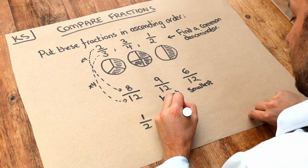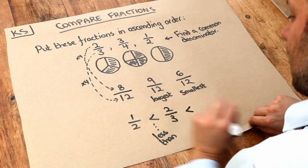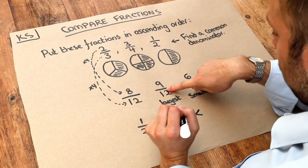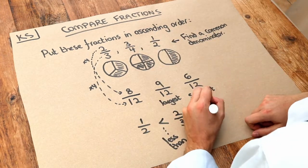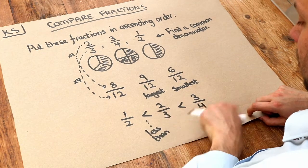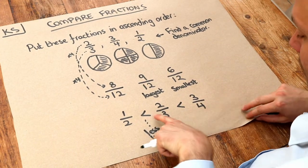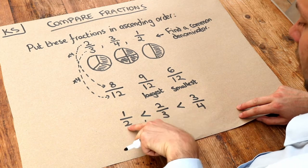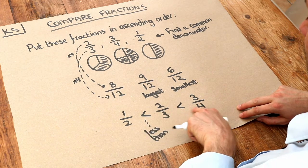So one-half is less than two-thirds, and then that's less than this middle one which was the biggest, three-quarters. So that's the order of those three fractions. We could write that using these special symbols which means less than. So one-half is less than two-thirds is less than three-quarters.